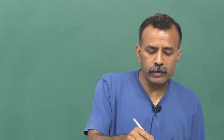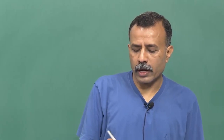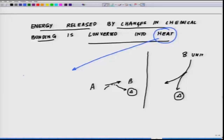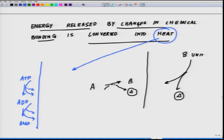The lesser the heat evolved, the more efficient the energy conversion. For example, when an ATP molecule breaks down to ADP and eventually to AMP, energy is released and some heat is also released. Depending on which molecule liberates the least amount of heat, one can assess how efficiently the conversion proceeds. This concept of energy released by chemical bonding being converted to heat will be discussed further.